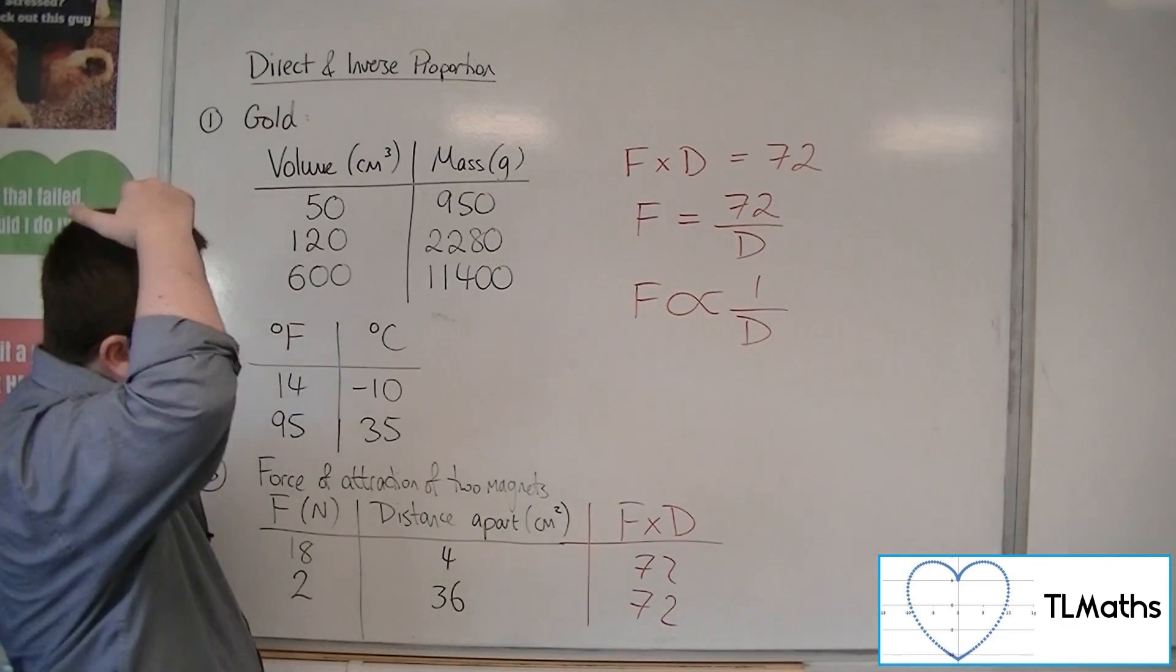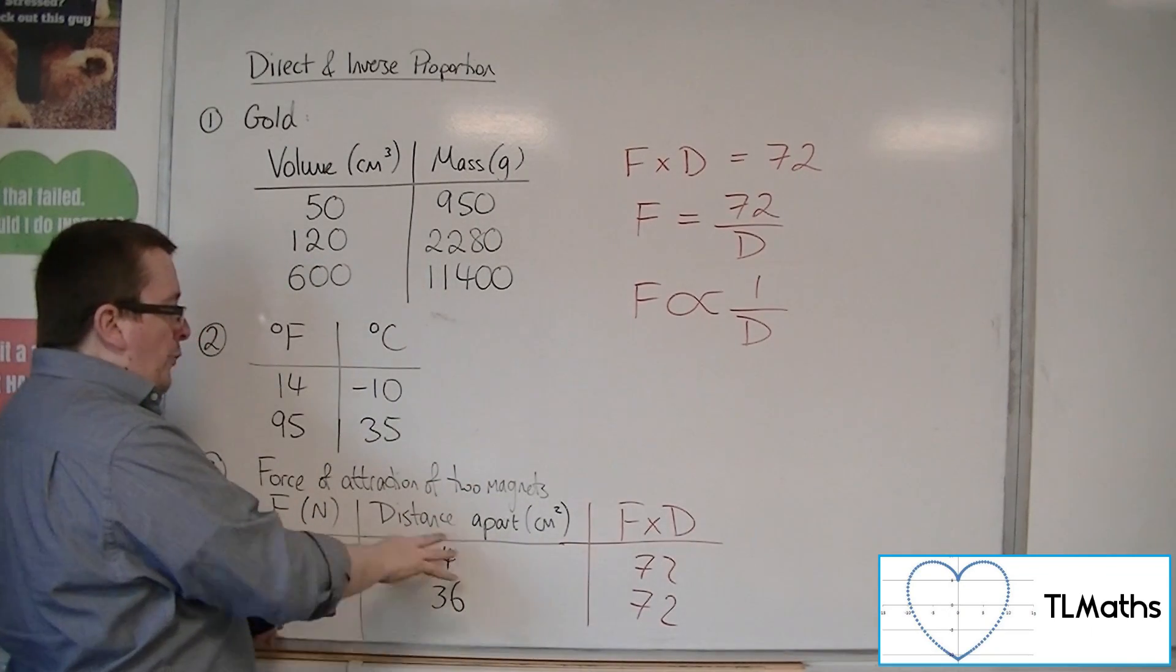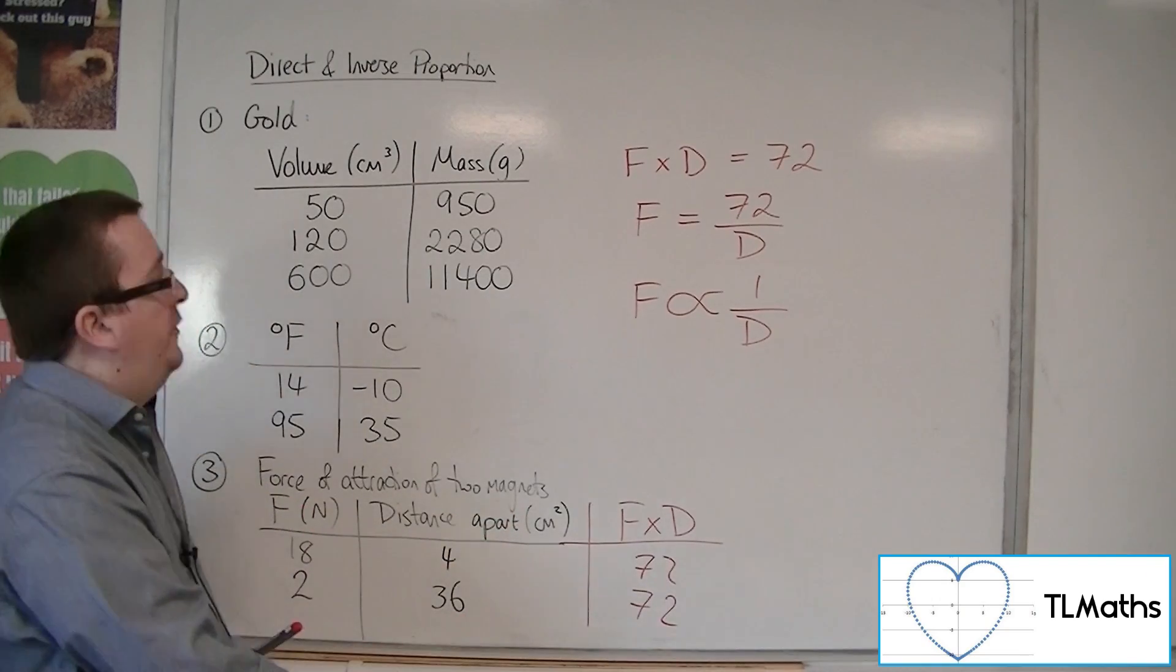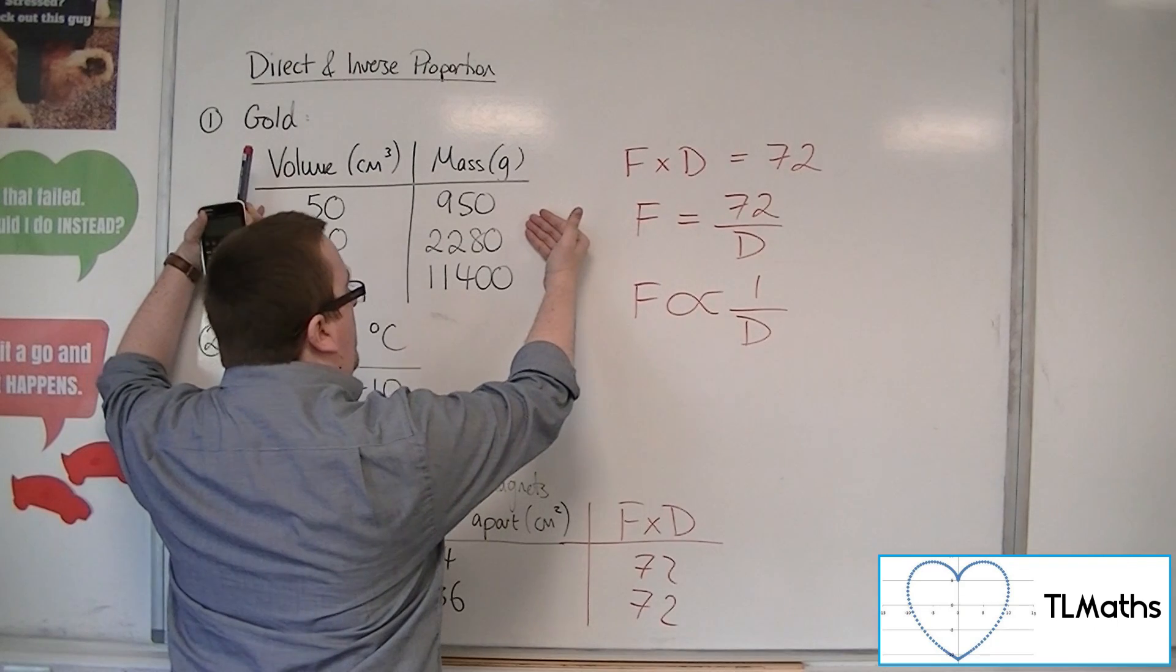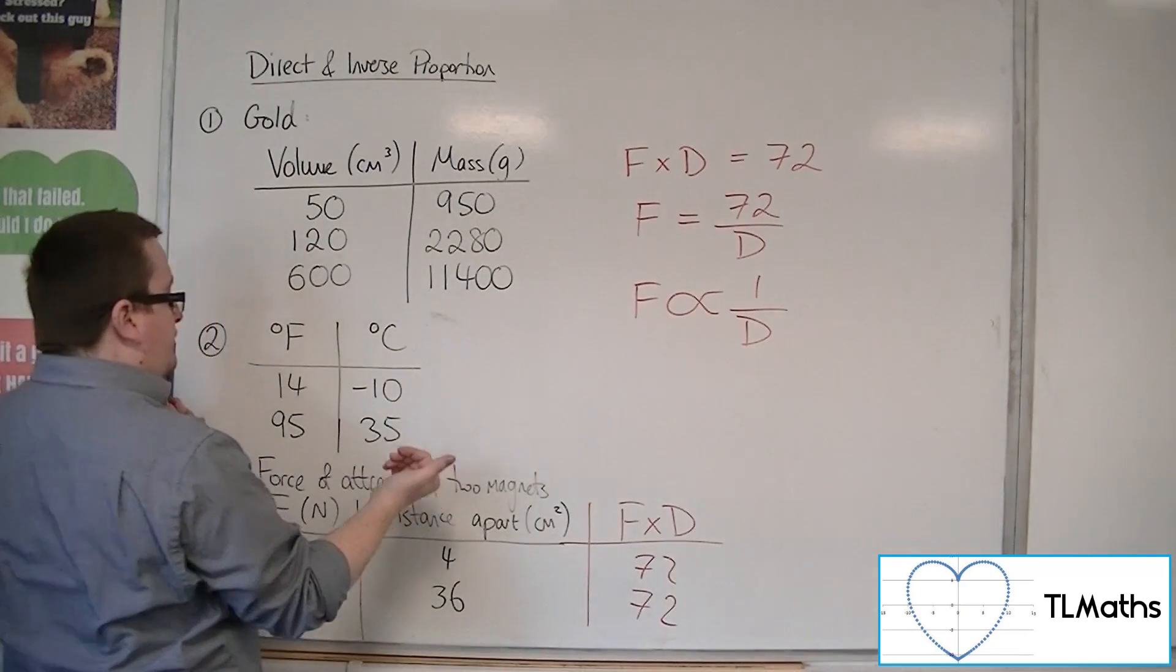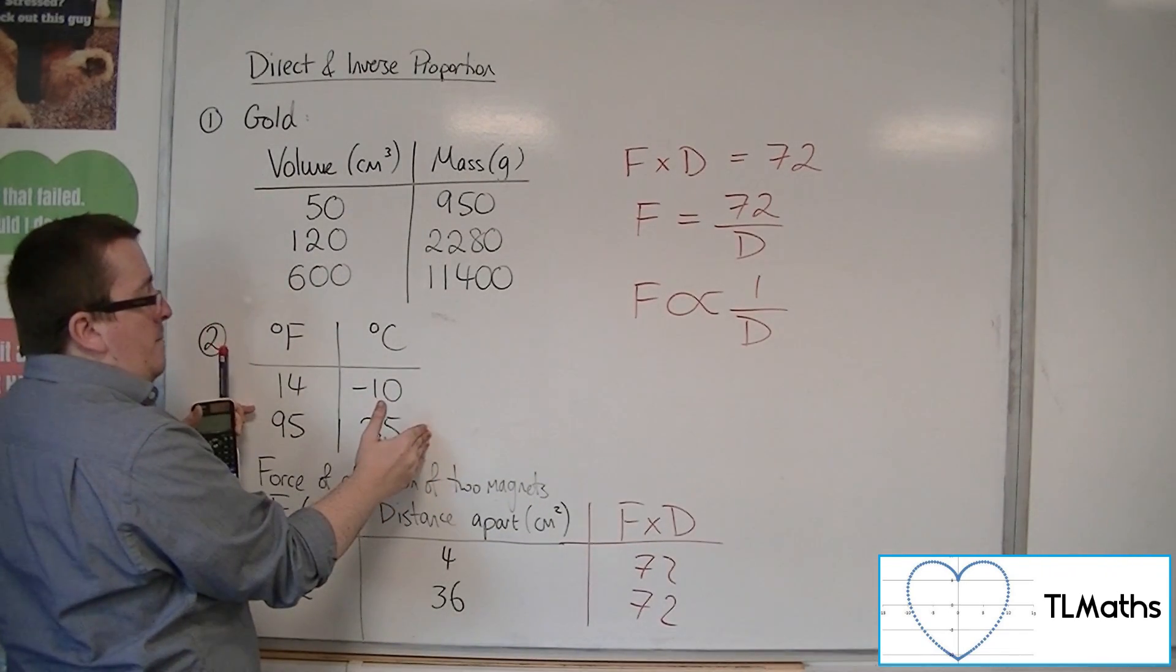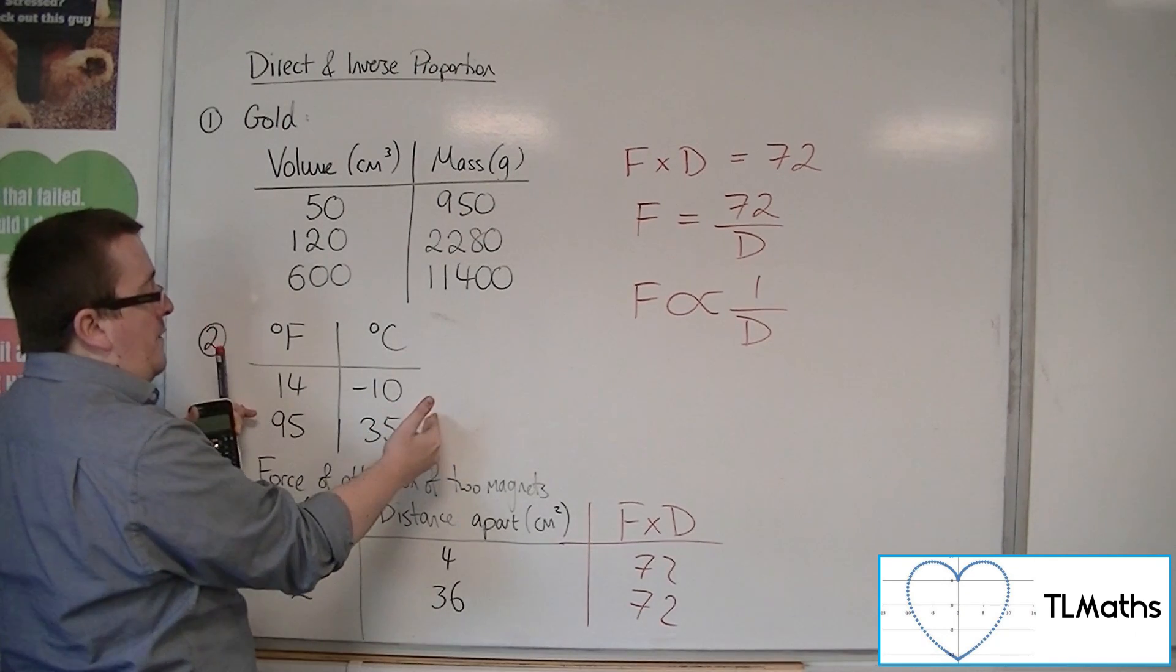So you can use these values, you can multiply them together, in this case, to show that they are inversely proportional. Up here, we divided one by the other to show that they were directly proportional. And you could either, you know, multiply one by the other to show that they're not inversely proportional, in this case, in Fahrenheit centigrade, or just proportional by just dividing one by the other.